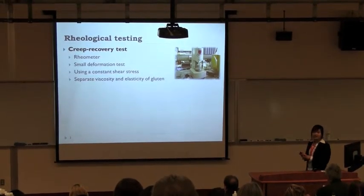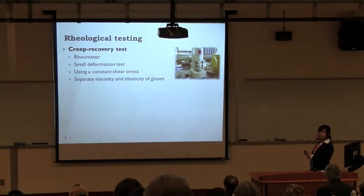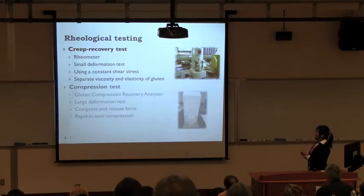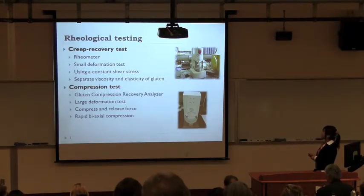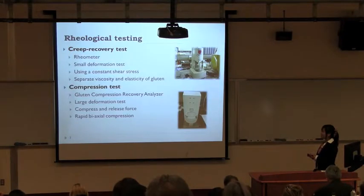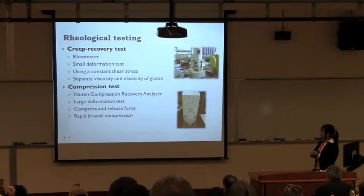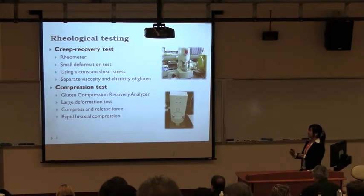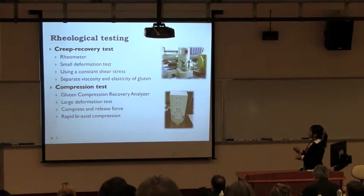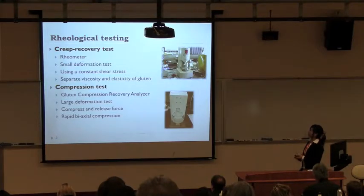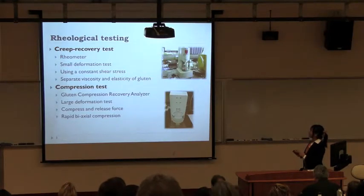The creep-recovery test is to apply small deformation to the gluten by using a shear constant stress. The other test is the compression test, using a machine called the gluten compression recovery analyzer. This test applies large deformation using compressed force for a constant time and then releases the force over a constant time. These two instruments are very useful because they can separate the viscosity and elasticity of the gluten, but they have a very high cost and take a longer time to perform.